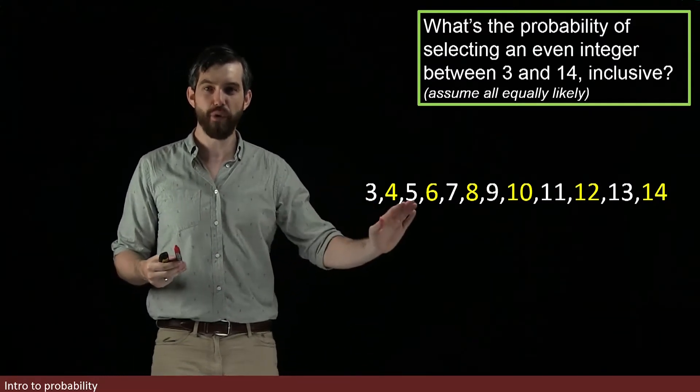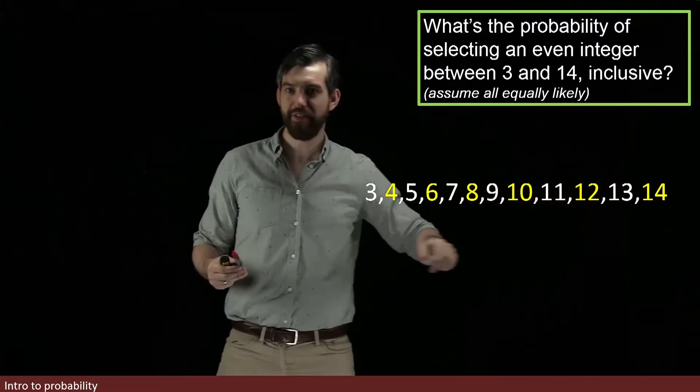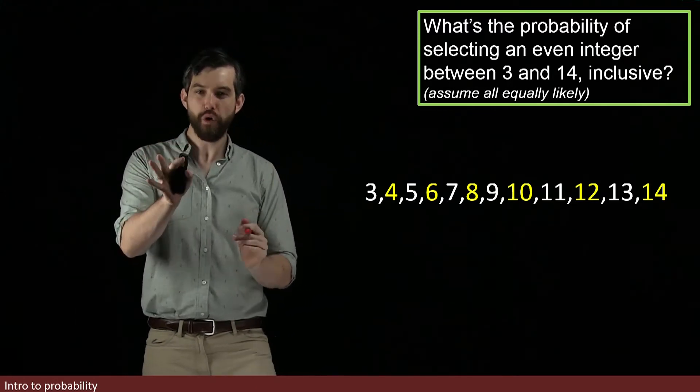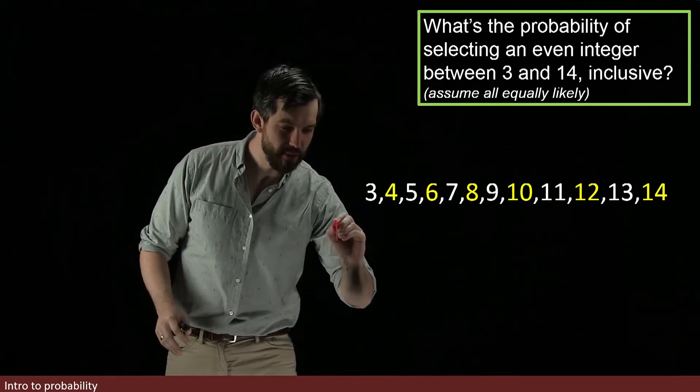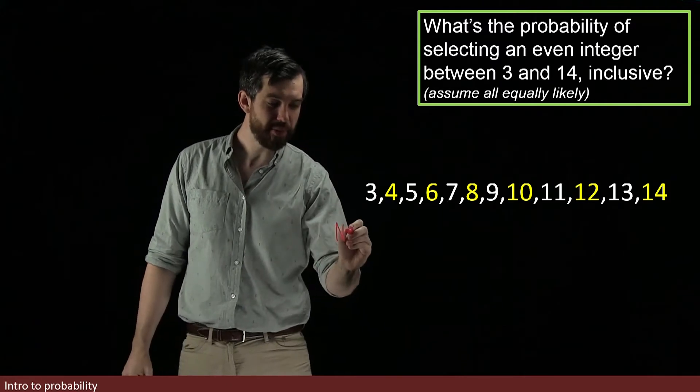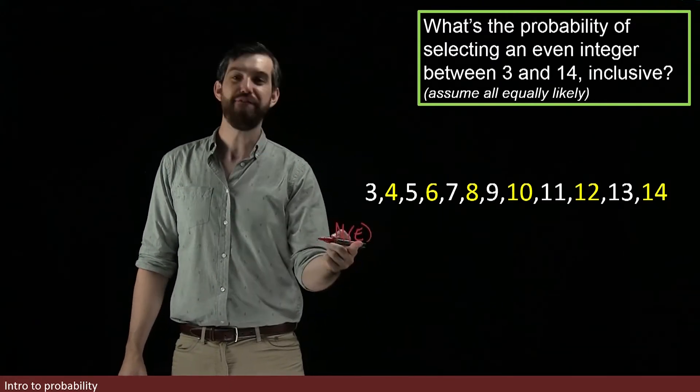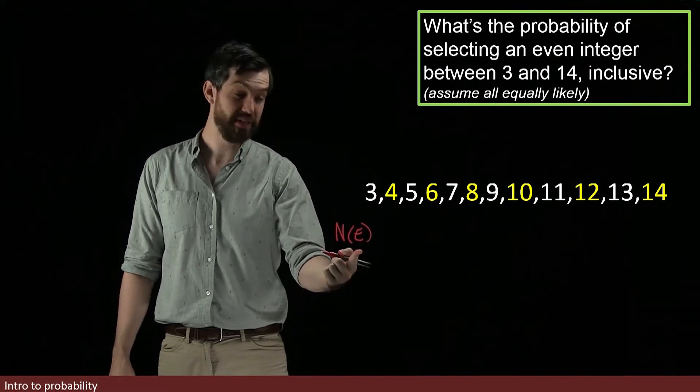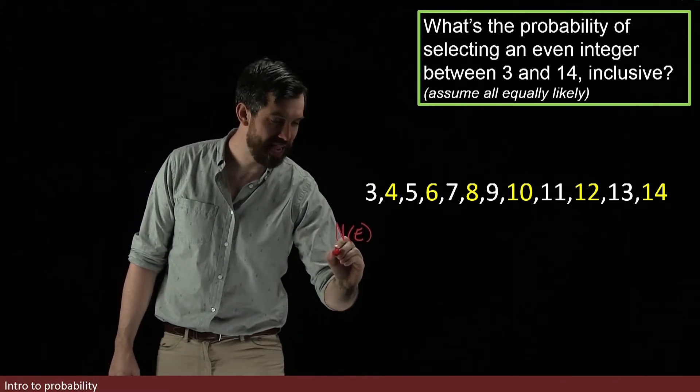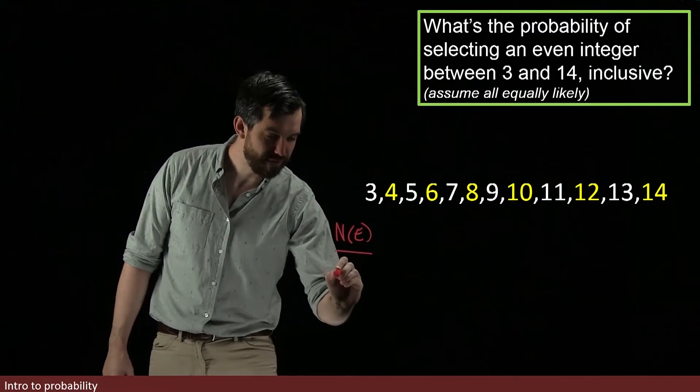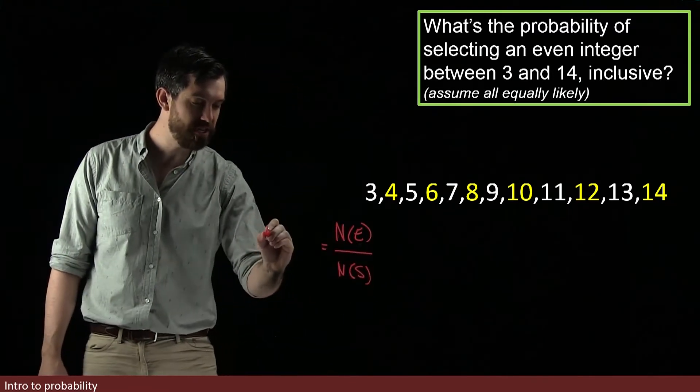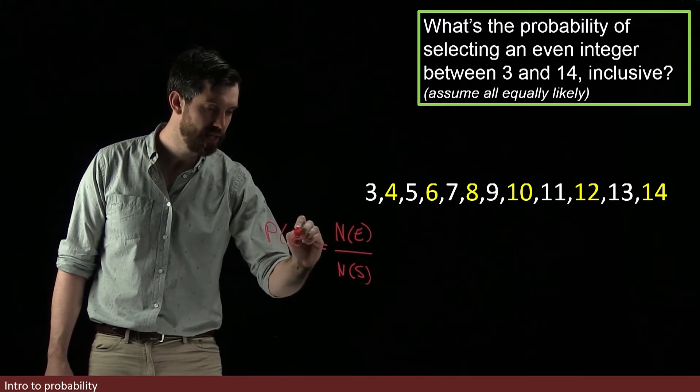I've got 3, 4, all the way down to 14, and I've highlighted in yellow the even integers. What our formula tells us is that I want to investigate the number of things in our event. In this case, the number of evens happens to be denoted by an E as well, but it stands for event, divided out by the number in our sample space. And this is going to be the probability of our event.